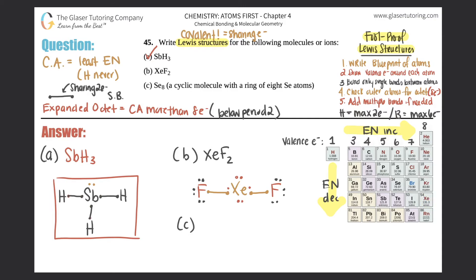To clean up the structure, make it as symmetrical as possible. The lone electrons on xenon should be arranged as pairs. Rearrange the four lone electrons into two pairs placed symmetrically — one pair on top and one pair on the bottom. Box that answer off — that's part B. For part C: Se₈, a cyclic molecule with a ring of eight selenium atoms.